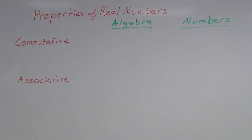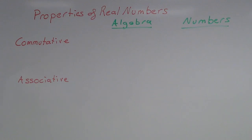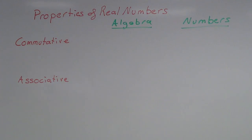First off, the commutative property. The commutative property simply states that I can add or multiply two numbers in any order — it does not matter what order I add or multiply them in. That gives us the difference between the commutative property of addition and the commutative property of multiplication.